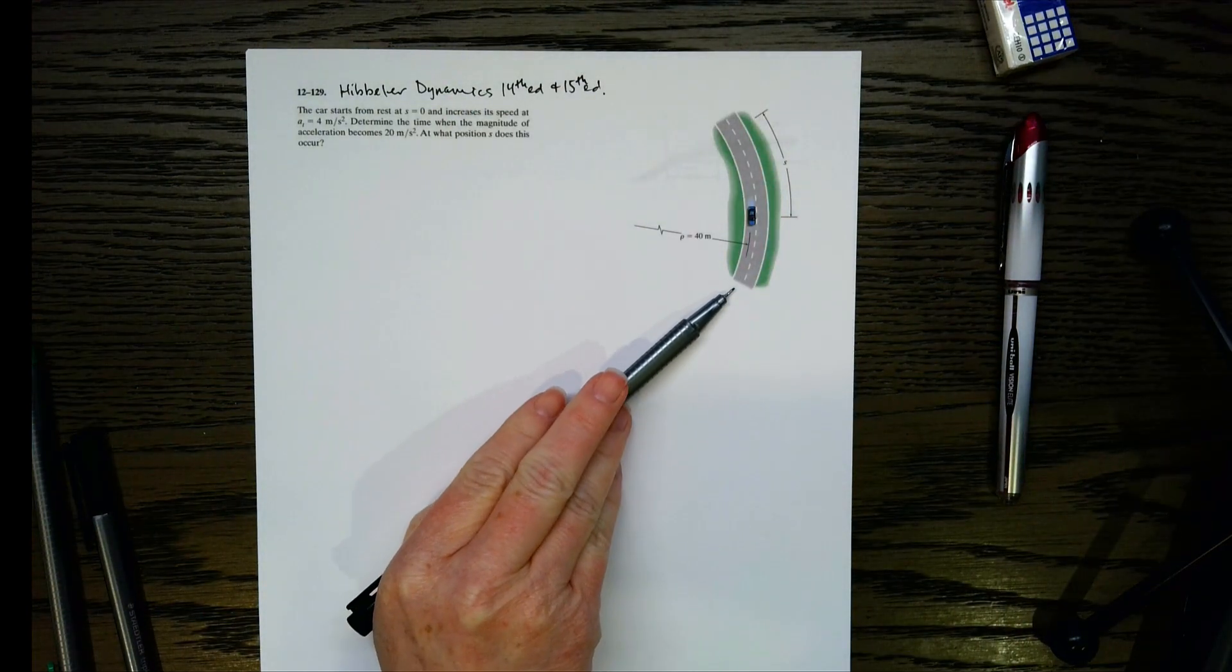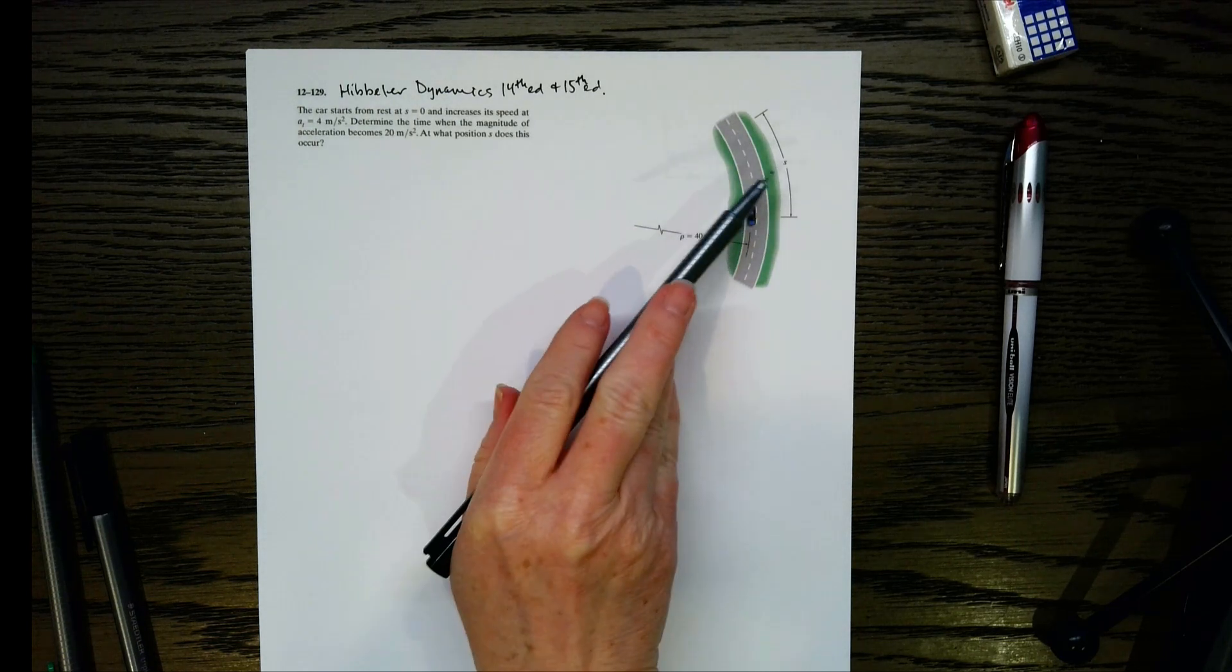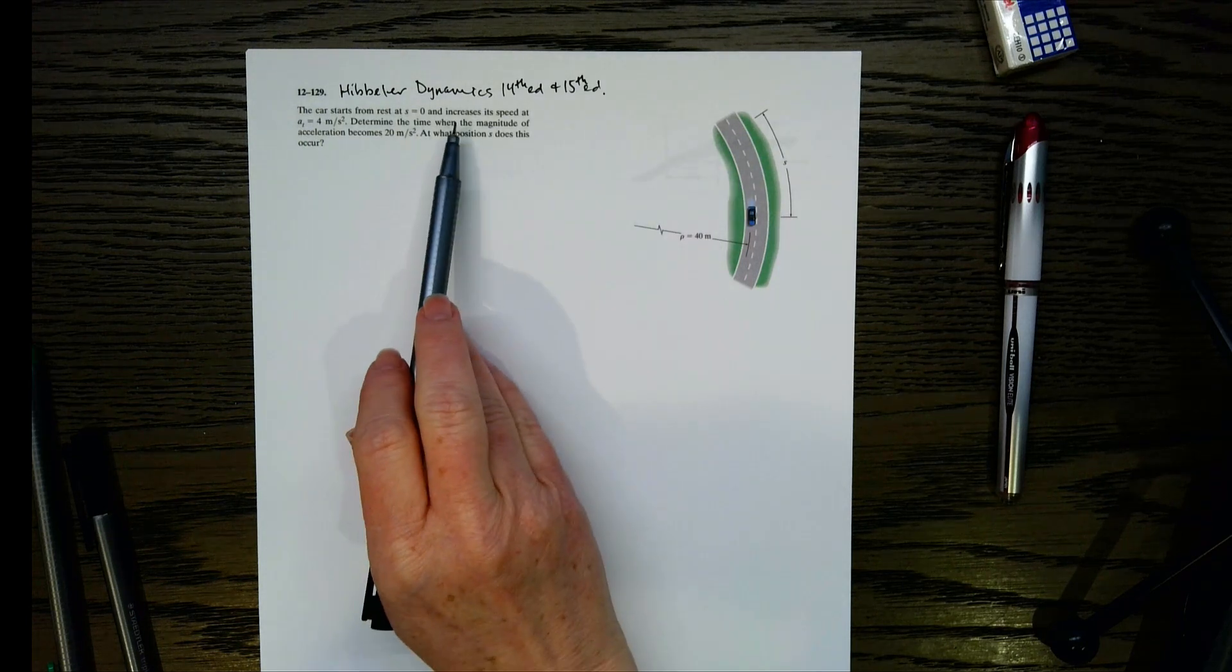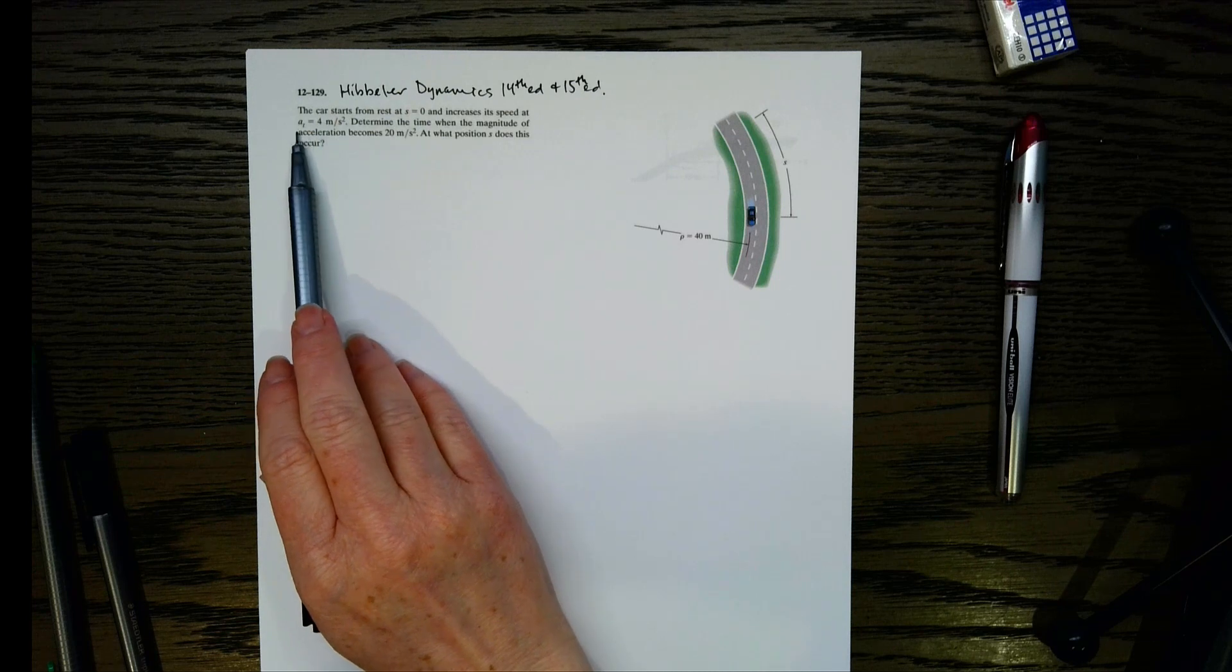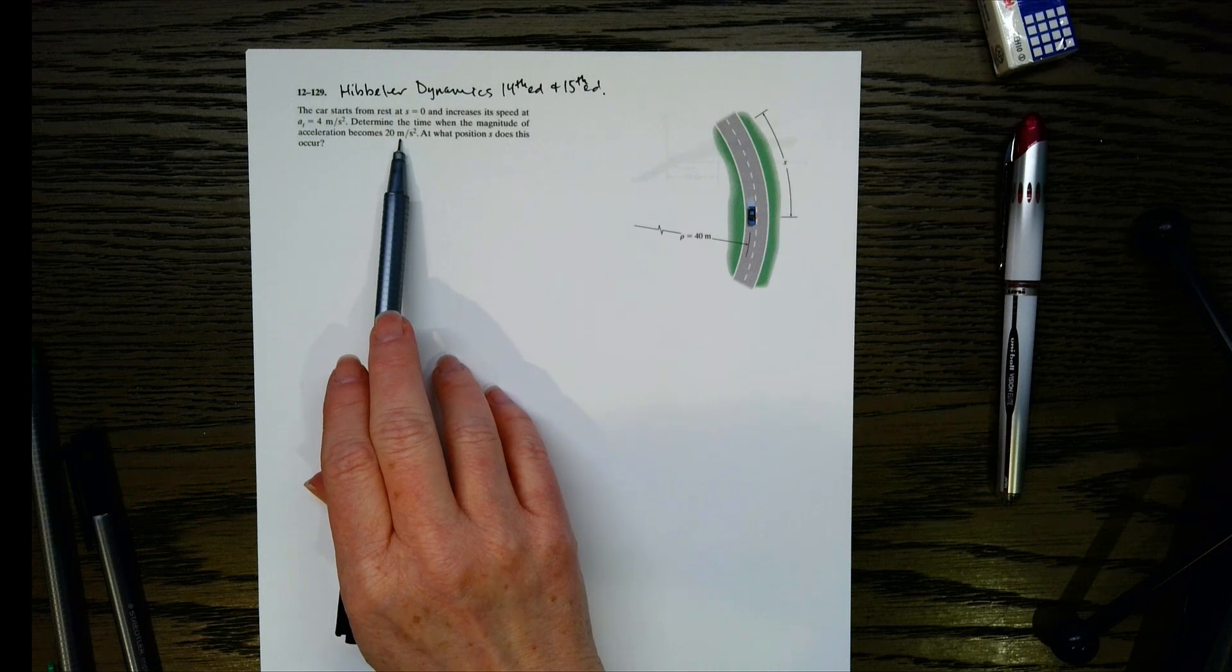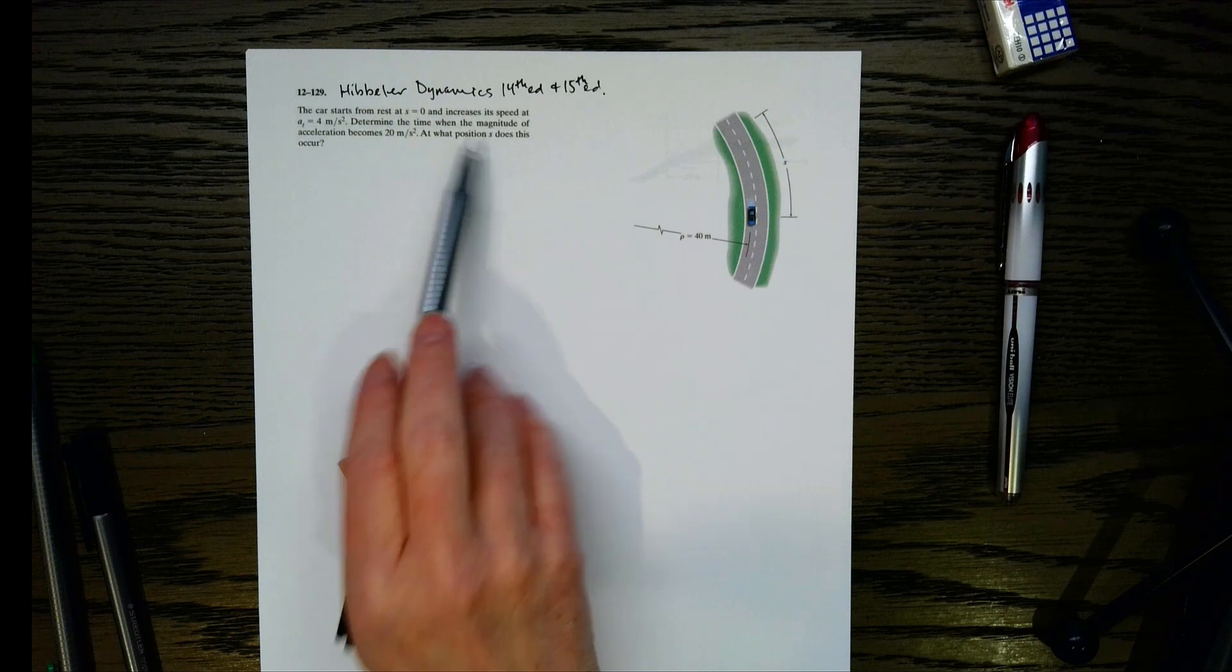So this one tells us that we've got this car going along this curved path, and it's going to start from rest at s equals 0. It increases its speed at a rate of 4 meters per second squared. We want to find the time when the magnitude of acceleration becomes 20 meters per second squared, and we want to figure out what value of s we have when that happens.